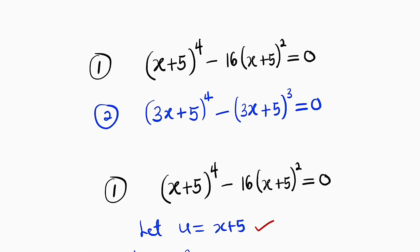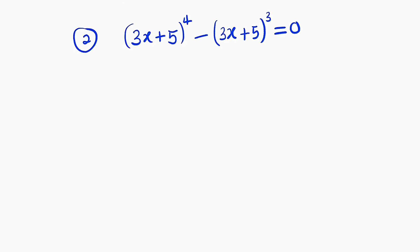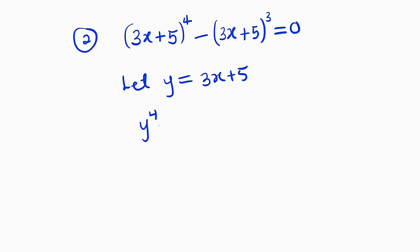Now let us take the second problem. We are given that (3x + 5) to the power of 4 minus (3x + 5) to the power of 3 equals 0, and we want to find the value of x that satisfies this equation. Let me substitute — this time using a different letter. Let y equal to 3x plus 5, so our equation becomes y to the power of 4 minus y to the power of 3 equals 0.